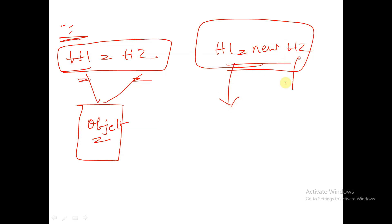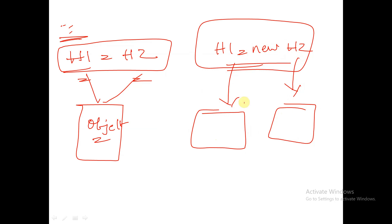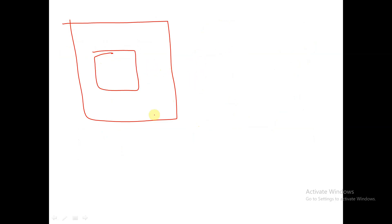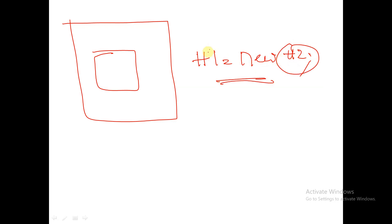In shallow copy, each handle points to a different object, and any changes made within one object will not be reflected in another object. However, the limitation of shallow copy is that if inside a class we have another class handle, that inner handle is not copied — it is commonly shared between the two objects. That's why we are going to deep copy.